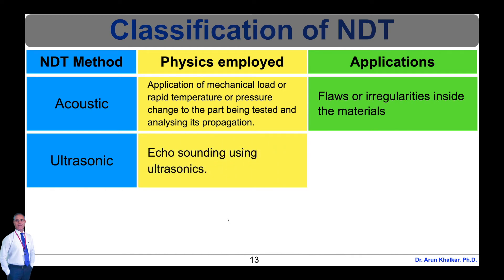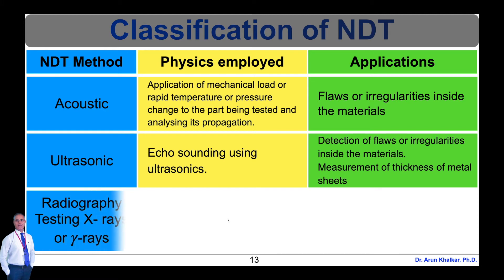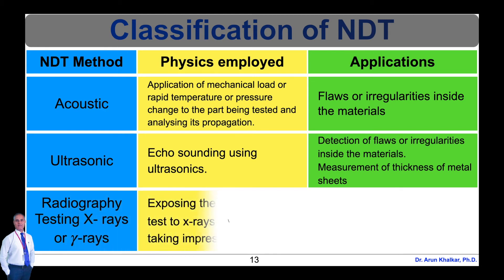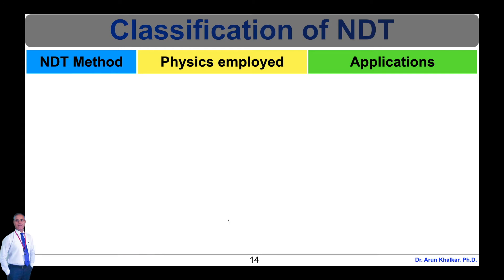Next is the ultrasonic method, in which echosounding using ultrasounds is used. Applications include detection of flaws or irregularities inside the materials and measurement of thickness of metal sheets. Next is radiographic testing using X-rays or gamma rays, in which exposing the materials under test to X-rays and taking impressions is used. Applications include detection of cracks, cavities, flaws, and porosity of materials.